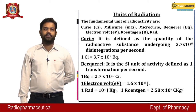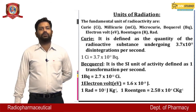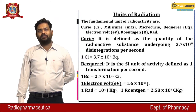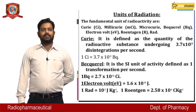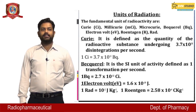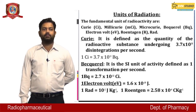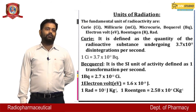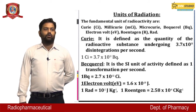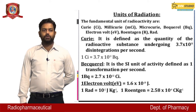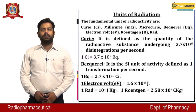1 Curie is equal to 3.7 × 10¹⁰ Becquerel. Becquerel is the SI unit of activity, defined as 1 transformation per second; 1 Becquerel equals 2.7 × 10⁻¹¹ Curie. 1 electron volt equals 1.6 × 10⁻¹⁹ Joule. 1 RAD equals 10⁻² Joule per kg. 1 Roentgen equals 2.5 × 10⁻⁴ C/kg.